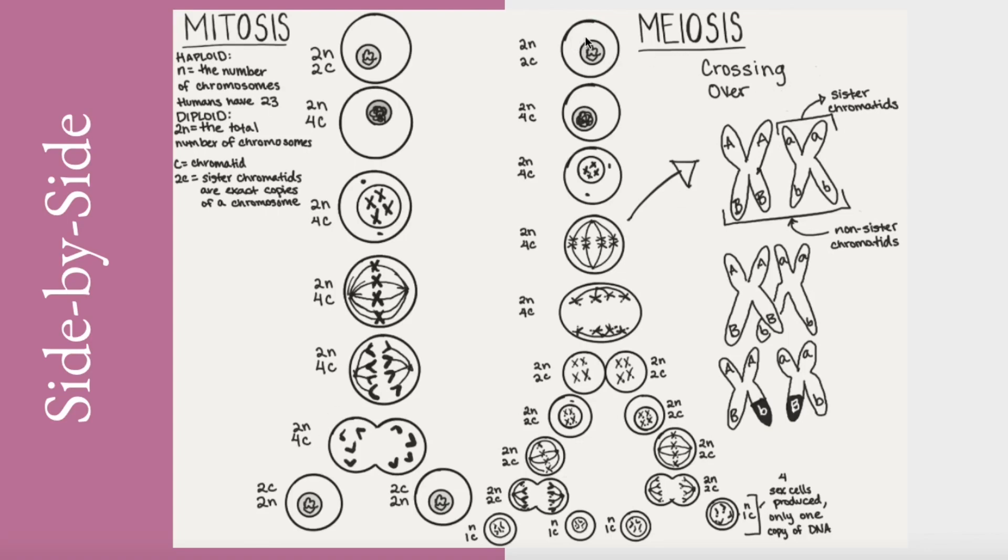In meiosis, you start with that diploid cell. You go through the first prophase where the crossing over occurs, shown on this right side here, again with capital letters and lowercase letters to show you how the genetic variation occurs. And then through a process of two divisions, you end up with just one of the chromatids and one set of the chromosomes for the letter N, creating haploid cells. These are called sex cells.